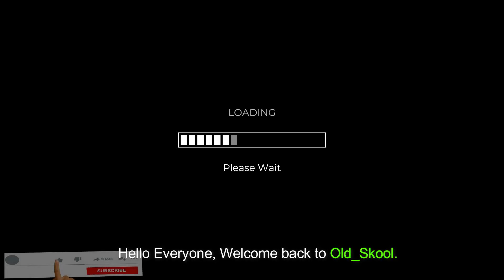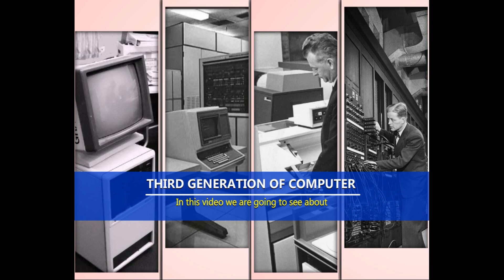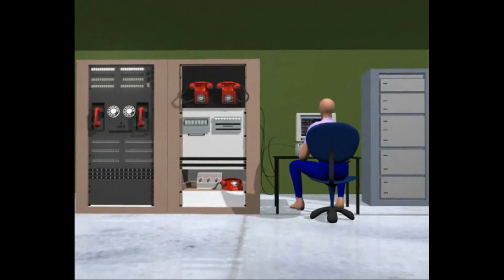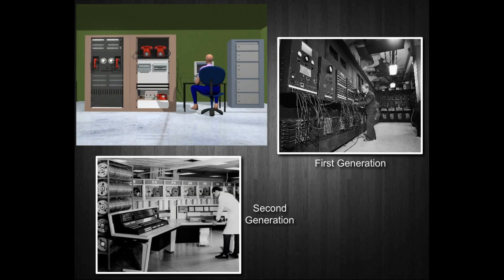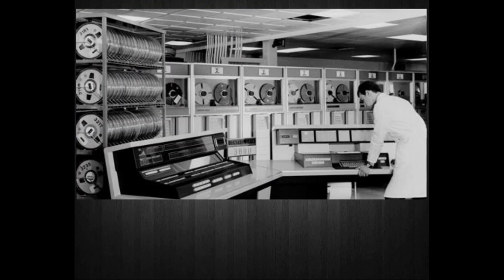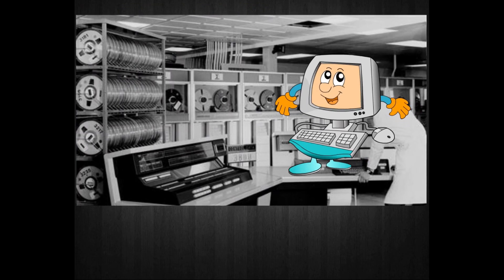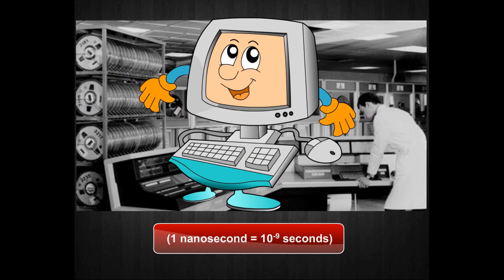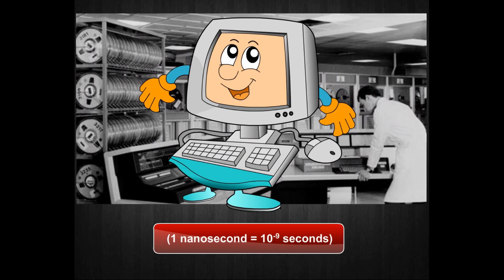Hello everyone, welcome back to Old School. In this series we are learning about the basics of computer systems. In this video we are going to see about third generation computers. The third generation computers were the fastest computing devices as compared with the first and second generation. The computational time was also reduced to a great extent, usually measured in nanoseconds — that is, one nanosecond is equal to 10 to the power minus nine seconds.